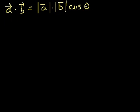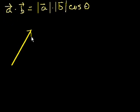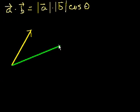So let me draw arbitrarily these two vectors. That is my vector a, nice big and fat vector. And let me draw vector b like that. And then let me draw the angle between them. This is theta. So there's two ways of viewing this. Let me label them — this is vector a, and this is vector b.